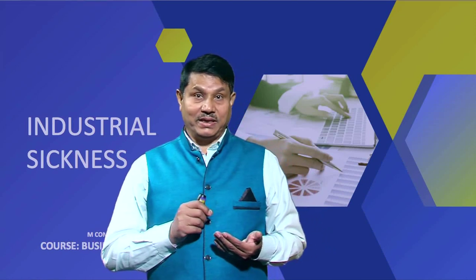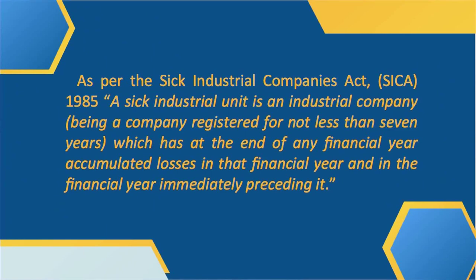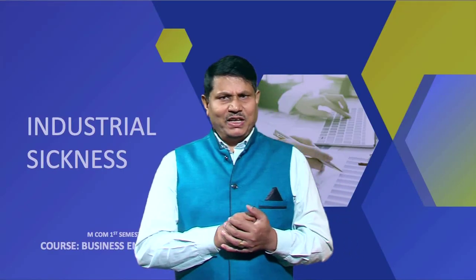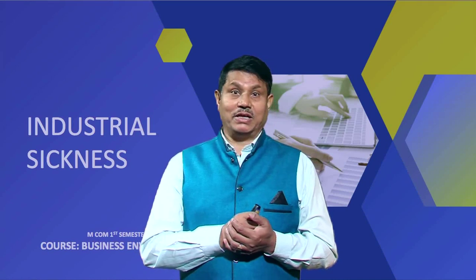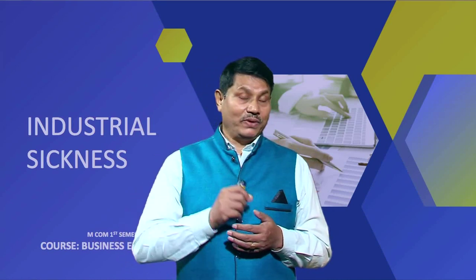The next important definition of sick industries is given by SICA itself — the Sick Industrial Companies Act of 1985. According to this definition, a sick industrial unit is an industrial company registered for not less than seven years, which has, at the end of any financial year, accumulated losses equal to or exceeding its entire net worth in that financial year and the immediately preceding financial year.